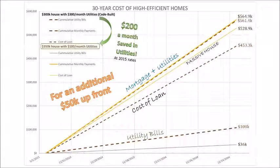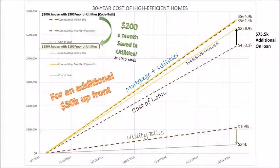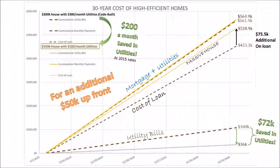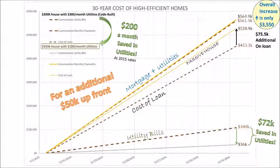So we have new numbers now for our loan. We're looking at a higher increased value because we financed that $50,000, but we're looking at significant operational savings over the lifetime of the building. The total increase for this scenario where you financed the $50,000 is only $3,500 over the course of 30 years.